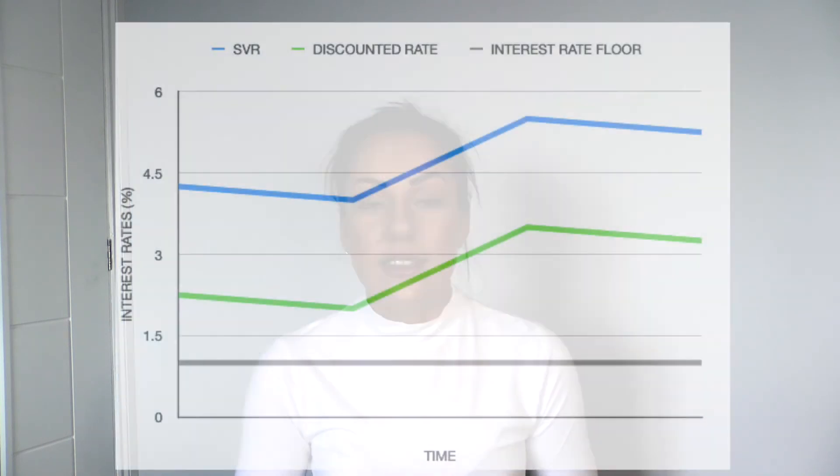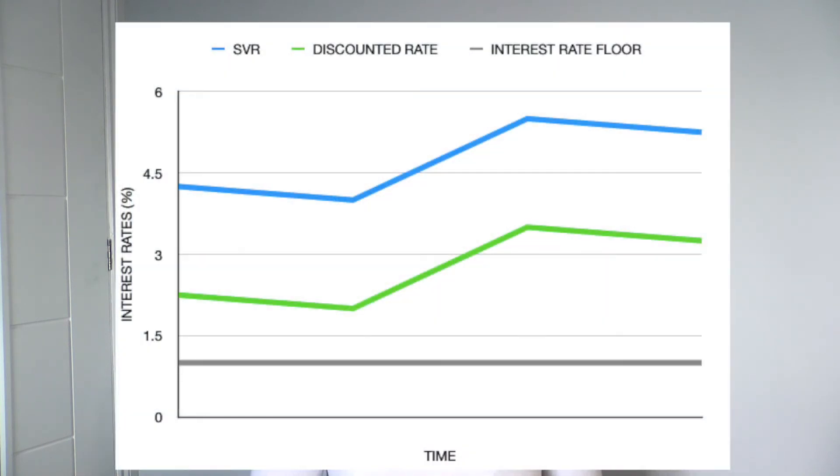With interest rates being so low and actually reducing over time, lenders have introduced a measure called the interest rate floor, which specifies the minimum rate you can drop down to so that you don't end up in negative interest rate territory. Once again, something to bear in mind is that there is no protection against steep rises in interest rates.